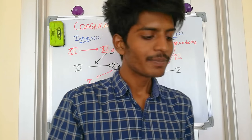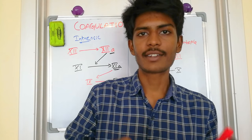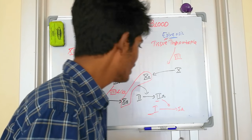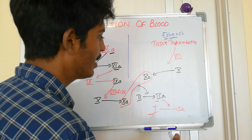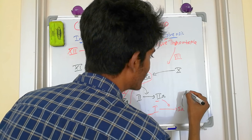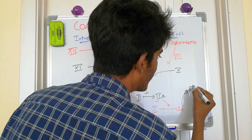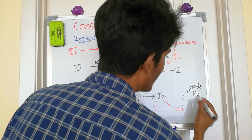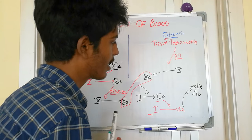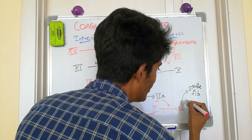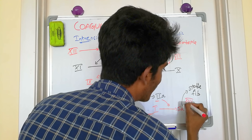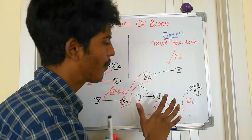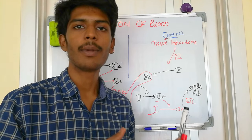The fibrin formed at this stage is not fully stable. It gets stabilized with the help of factor 13, the fibrin stabilizing factor. Once stable fibrin is formed, it creates the strong clot. This is the complete story of blood coagulation.